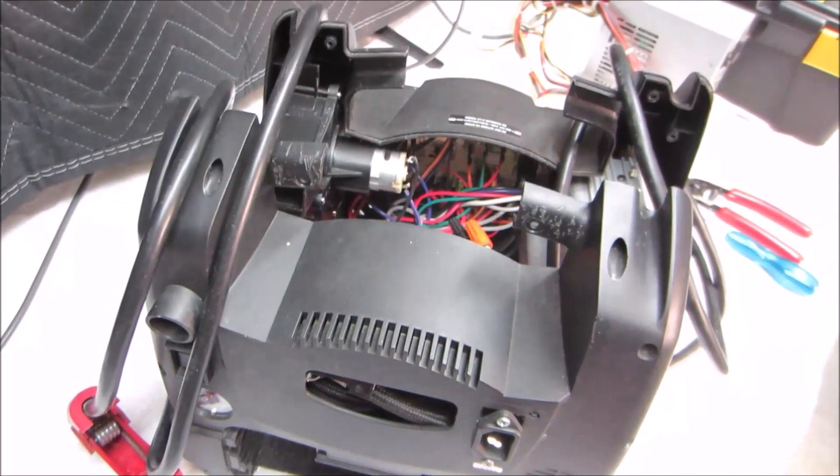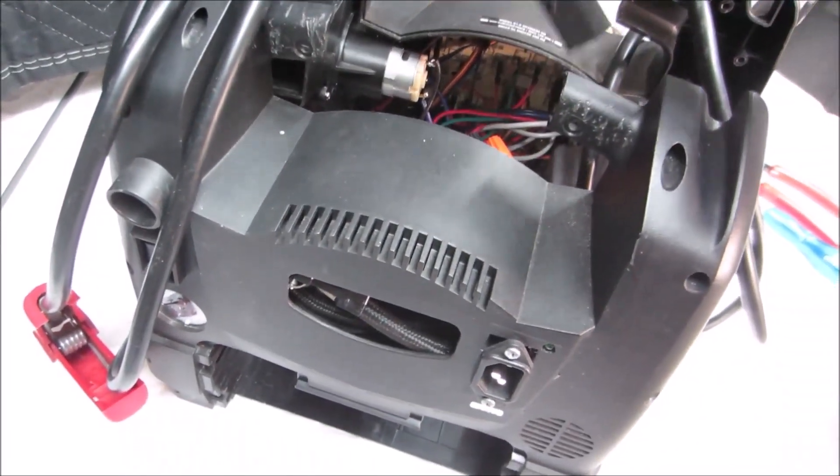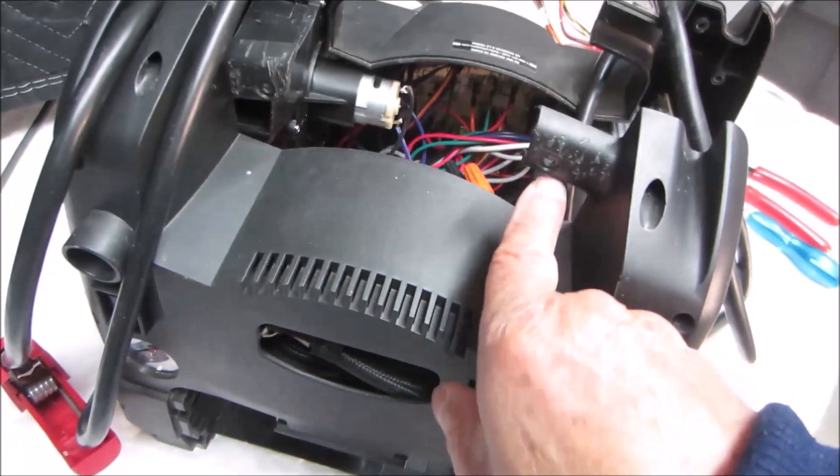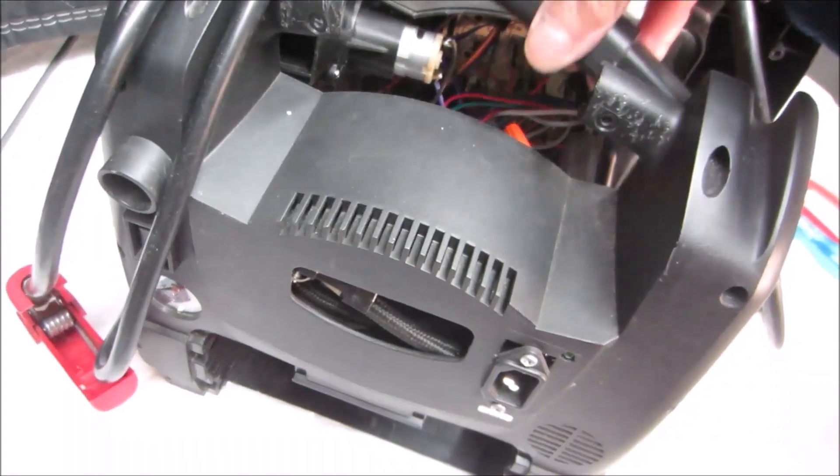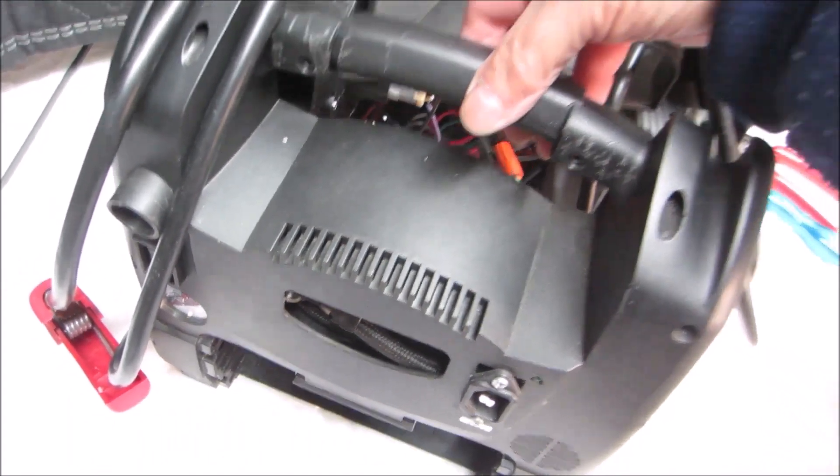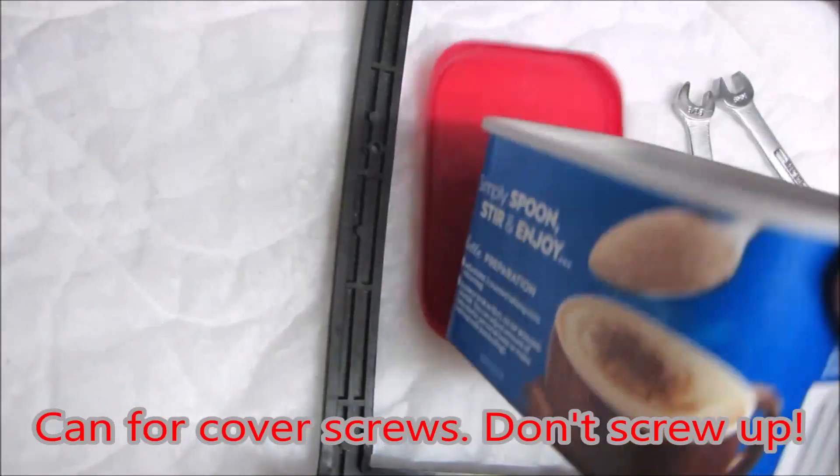So when you're taking the case apart, the first thing you're going to want to do is unscrew the handle. There are two very short screws here holding the handle in, and they're in the case in this can.